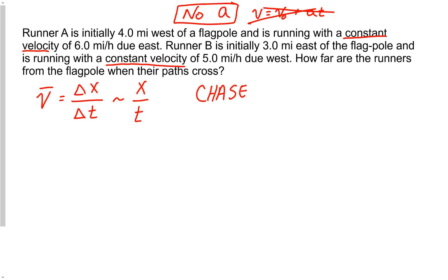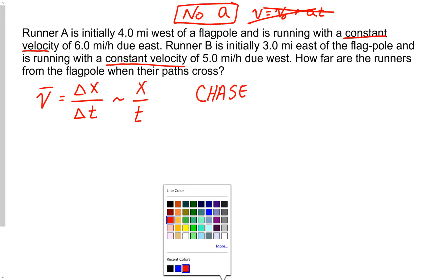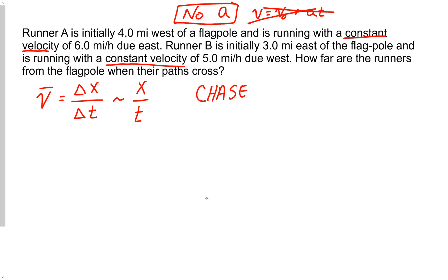It's two runners: one is west of a flagpole and running east, the other is east of the flagpole and running west, and eventually those two runners are going to run into each other. I'm going to make a little dash to represent my flagpole, and on my coordinate system I'm going to make that my zero position.